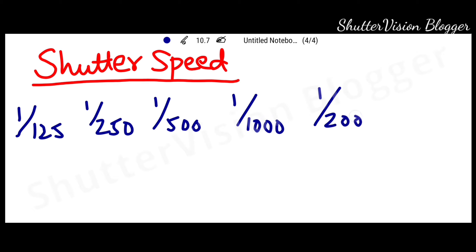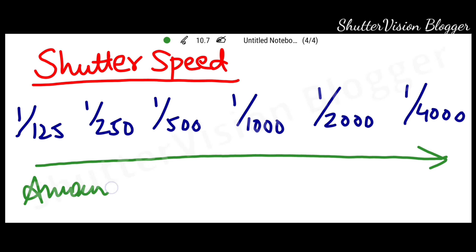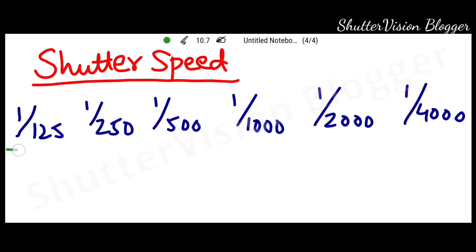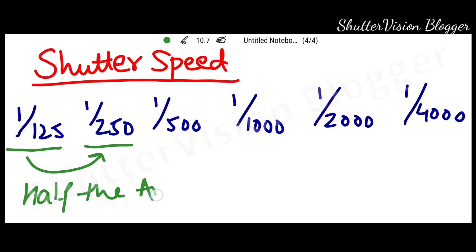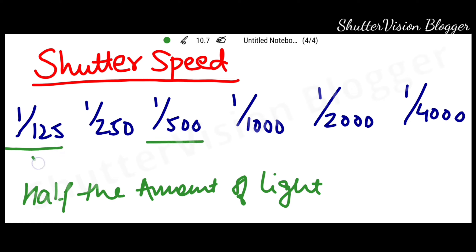Now let's take a sample here in fractions of seconds. The fraction of seconds is starting from 1/25th of a second to 1/4000th of a second, where 1/25th of a second is the slowest compared to the other values. So if we are going left to right, then we are reducing the amount of light. If we change from 1/25th of a second to 1/50th of a second, we are reducing the amount of light by 1 stop. Now if we move from 1/125th to 1/500th of a second, we are reducing the amount of light by 2 stops.